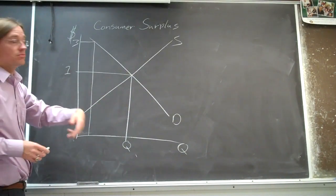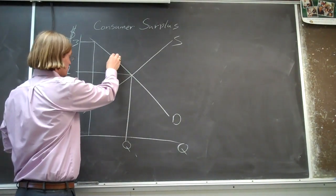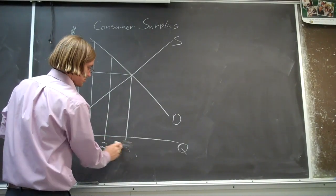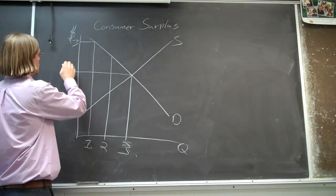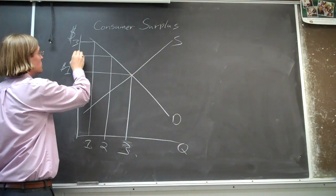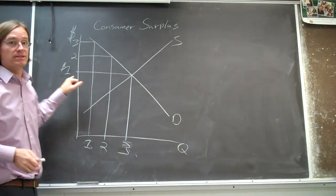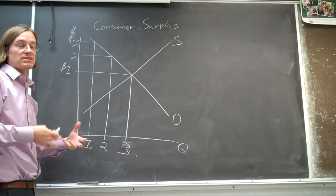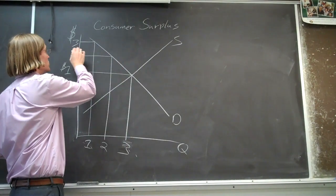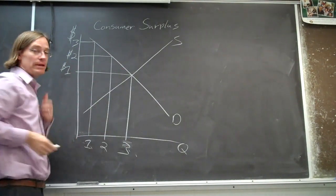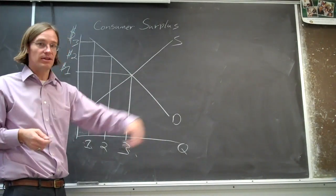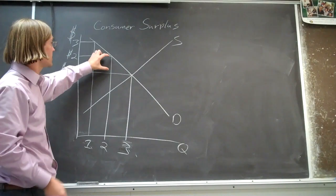As you eat more hamburgers, as you buy more hamburgers, maybe you bought a second hamburger. Well that second hamburger, again you only paid one dollar for it. That's the equilibrium price. That's the market price. That's the price on the sign at the restaurant. You only paid one dollar for it, but you would have valued that second hamburger at two dollars. You would have been willing to pay two dollars. You would have given the guy two bucks for that hamburger, but you gave him one dollar, he gave you a hamburger. You're pretty excited about that.